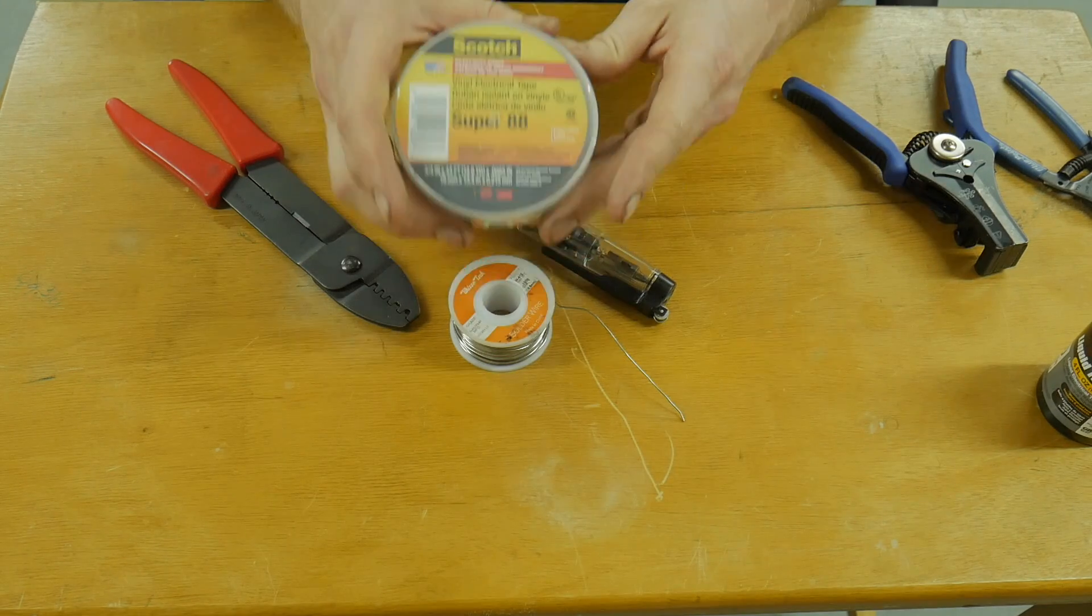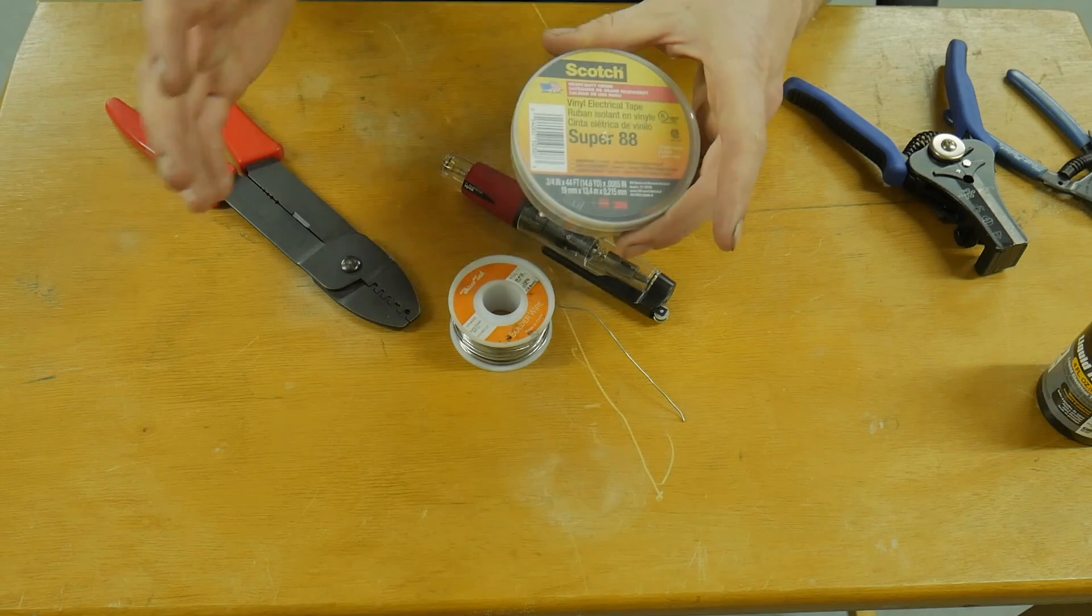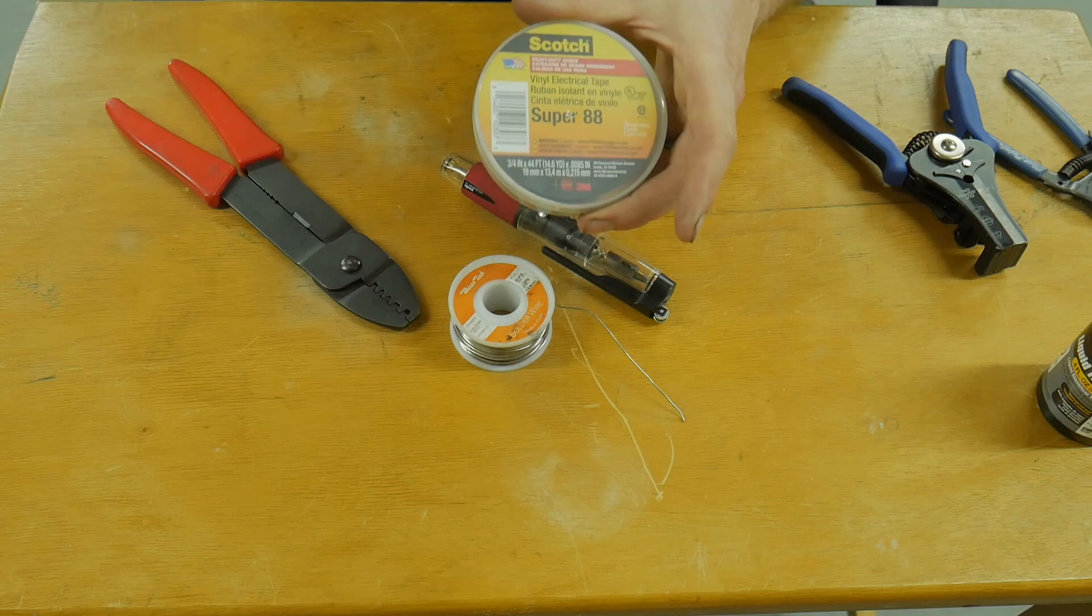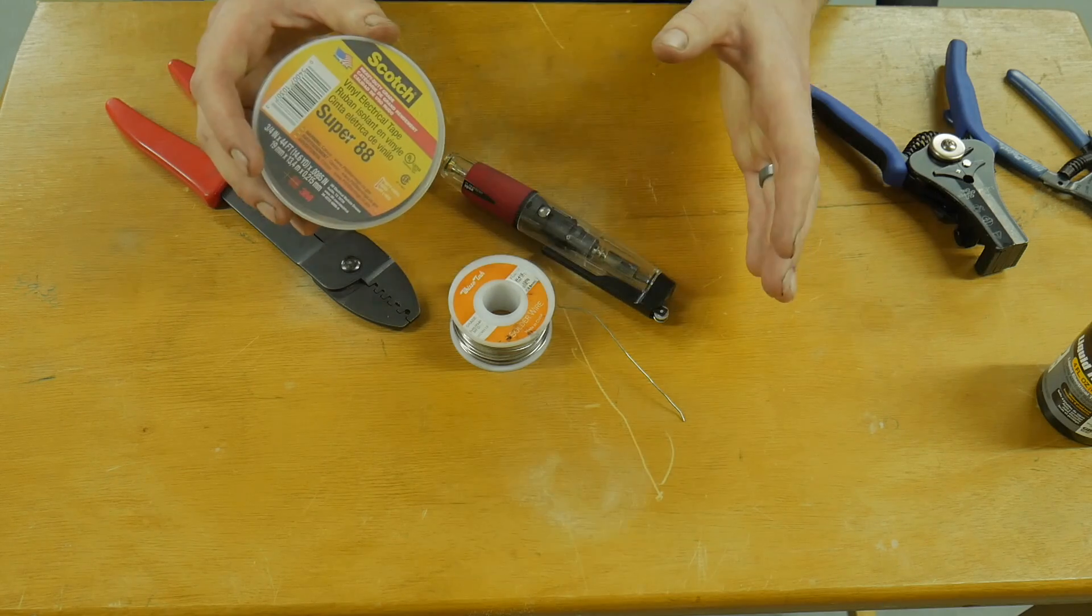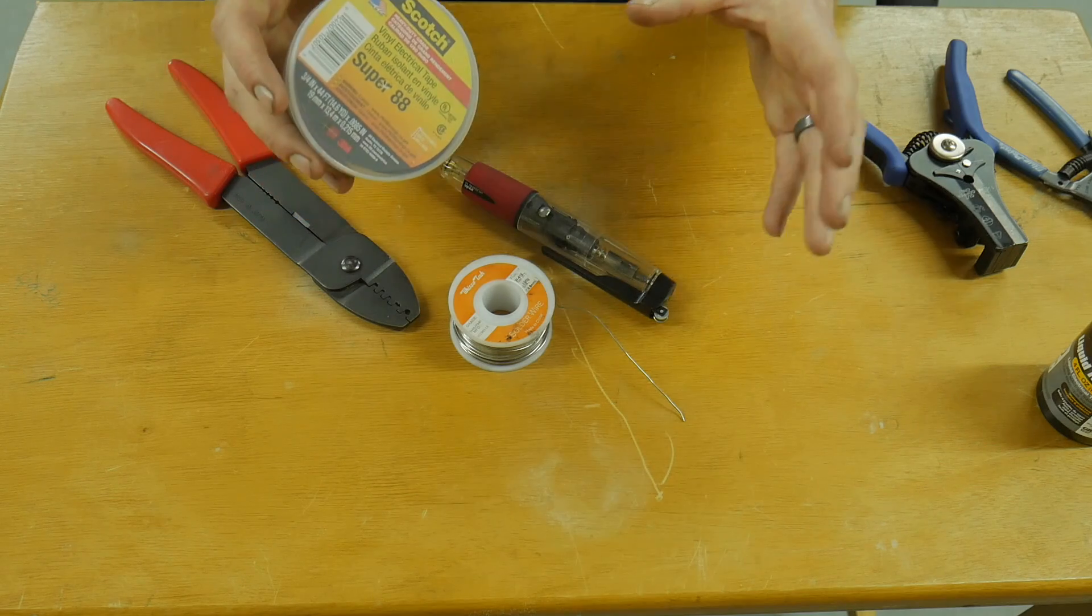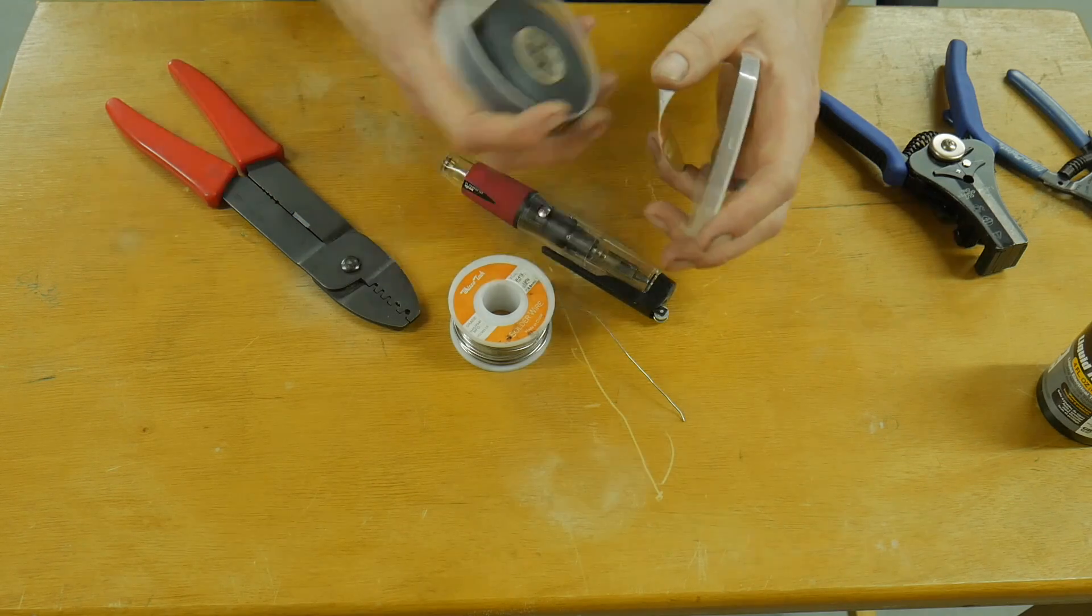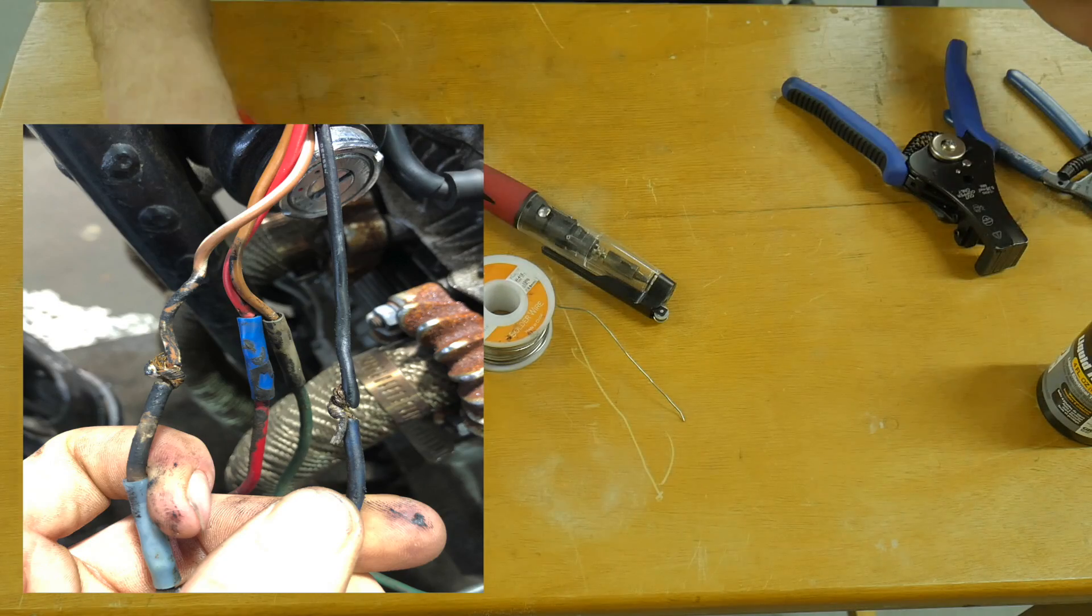Electrical tape, I always recommend getting some kind of brand name electrical tape. Scotch makes some amazing stuff. They got 33 plus, which is great. Super 88, a little bit more expensive. Just stay away from the super cheap stuff. It's garbage. Trust me, it's garbage. This stuff's way more pliable and it spins better around the wires and all that kind of stuff. It doesn't leave that goopy disgusting stuff all over the place.